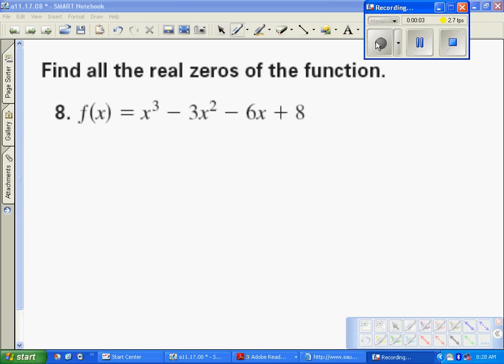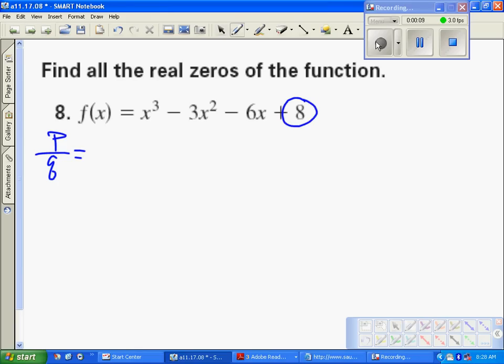Good. Possible rational zeros p over q are going to be the factors of 8—plus or minus 1, 2, 4, 8—divided by the factors of the leading coefficient, plus or minus 1. Since we're dividing by 1, we don't have to do any major division, and so we've got eight possible solutions we can look at.